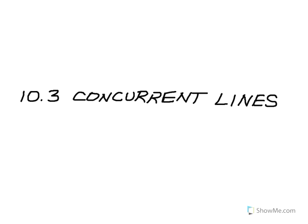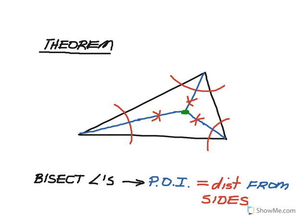Lesson 10.3 is about concurrent lines. The first theorem in this lesson is about when you take a triangle and you bisect each of the three angles. All of the angle bisectors intersect in one point. We call these lines concurrent because concurrent lines are two or more lines that intersect in this one point.